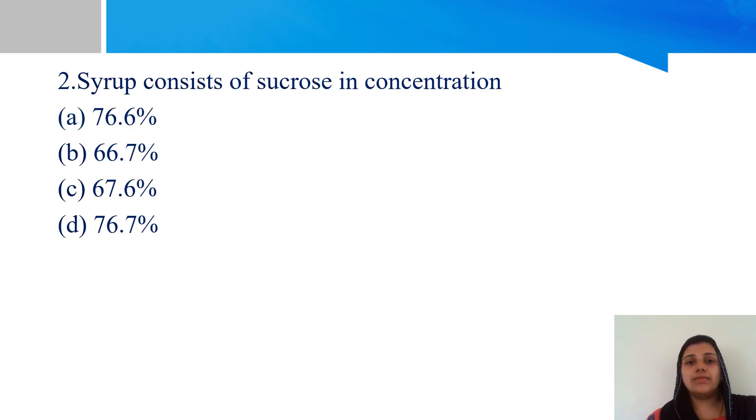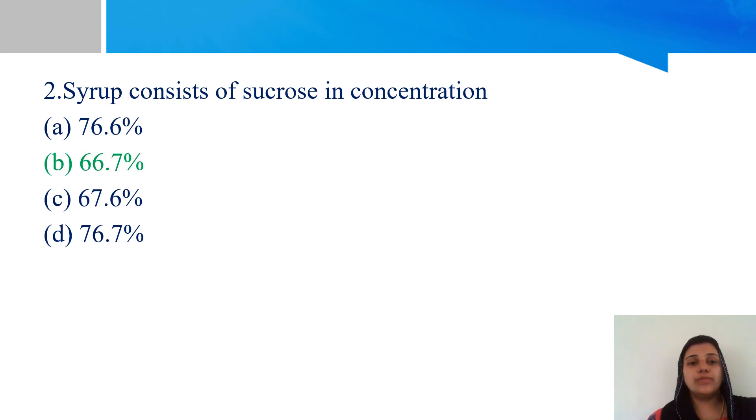Second question is, syrup consists of sucrose in what concentration? The concentration range is important. Options are 76.6%, 66.7%, 67.6%, 76.7%. The right answer is option B, 66.7%. Sucrose is present in syrup at this concentration.